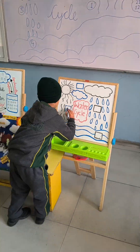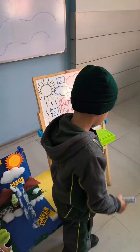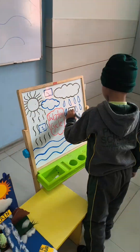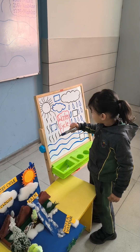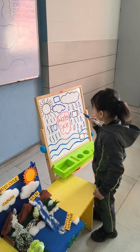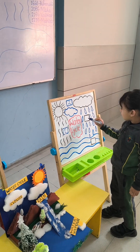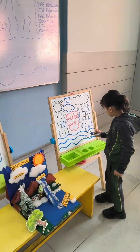Evaporation — water turns to vapor. Condensation — vapor turns to drops. Precipitation — drops fall down, and they collect all over the ground.